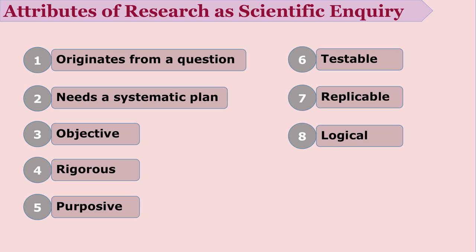Research is a logical process. The various choices and decisions made in the research process definitely have certain logic behind them. There is logic between the objective and the research method chosen, and logic between the research method and the tool for data collection. The process is completely linked with one another by logic rather than personal preferences.